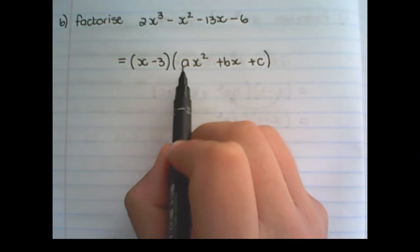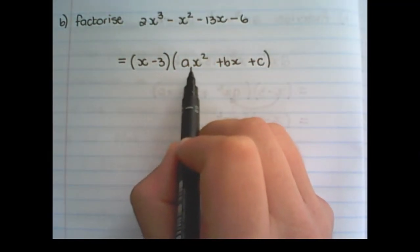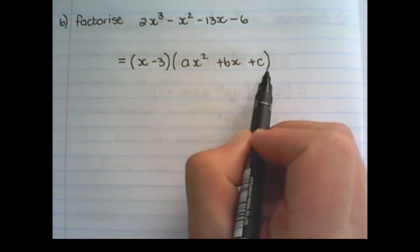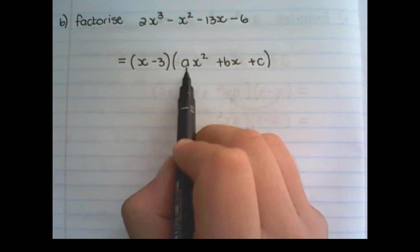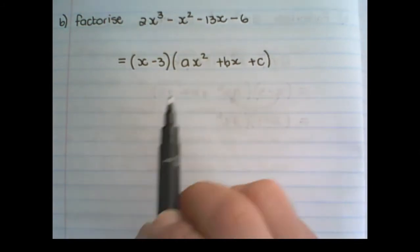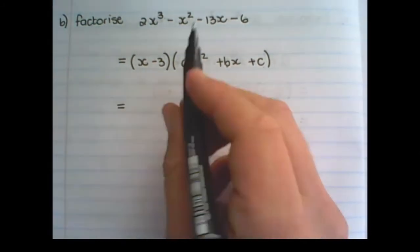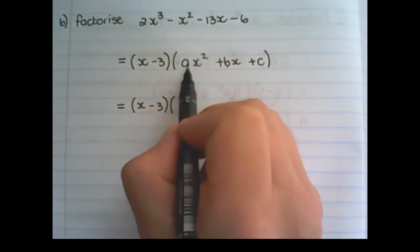Next we write down a standard quadratic expression. In order to factorize this expression, we need to find the values of a, b, and c. Let's start with a.